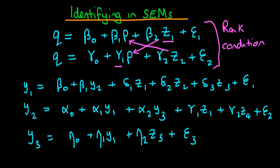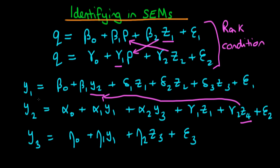In the first equation, the only endogenous variable is y2. To estimate the parameter beta 1, we need at least one exogenous variable for y2 which isn't included in this first equation to act as an IV for y2. We do have one: z4 is an exogenous variable found in the second equation, so z4 can act as an IV for y2 in the first equation. Our first equation is therefore fully identified.